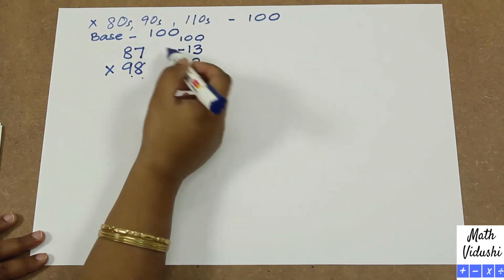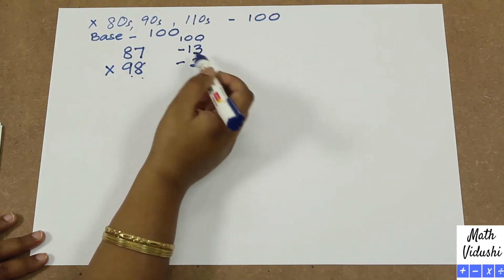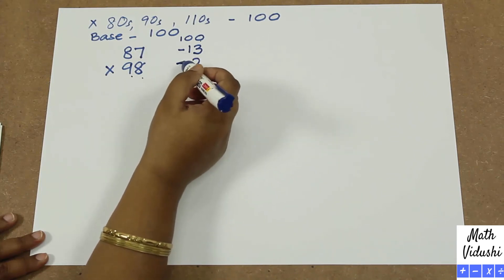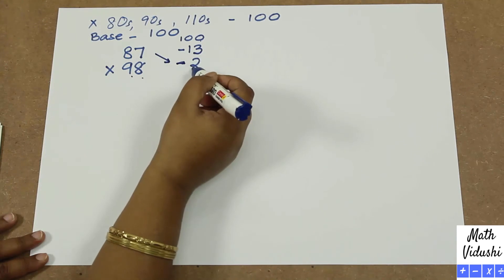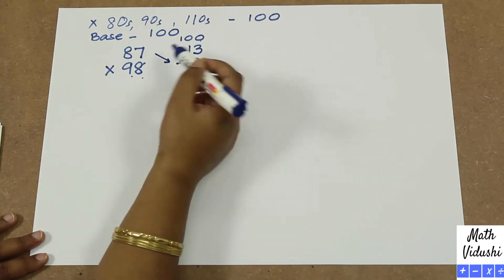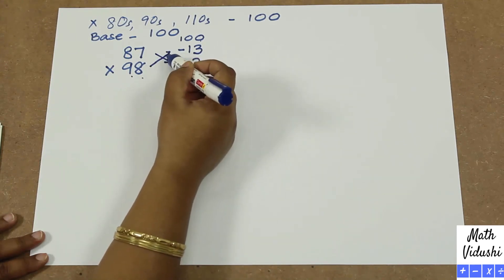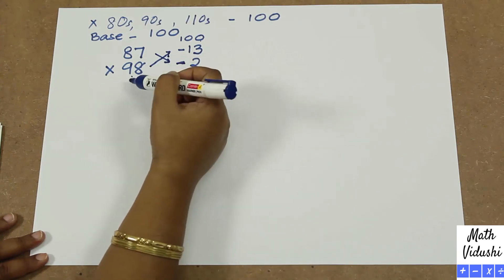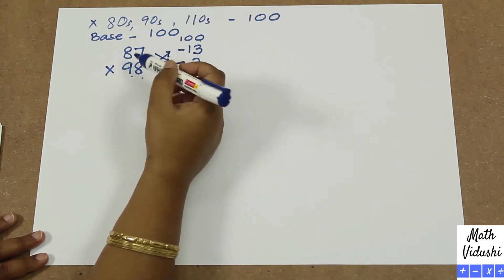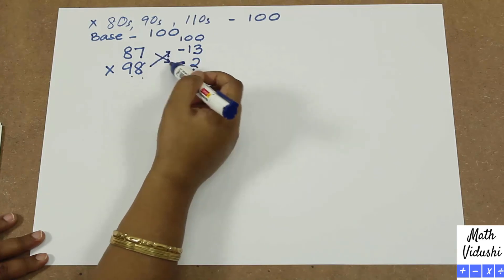So now what do we do? We cross subtract, or cross add. Because it's minus here, we subtract. So 87 minus 2, which is 85. You can also do 98 minus 13, which will again be 85 only, for every single sum that we do.